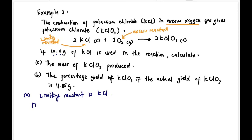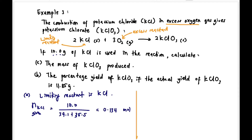Calculate mole KCl given = 10 g ÷ molar mass of KCl = 0.134 mol. That is the mole of KCl given. From the balanced equation, 2 moles of KCl produce 2 moles of KClO₃.